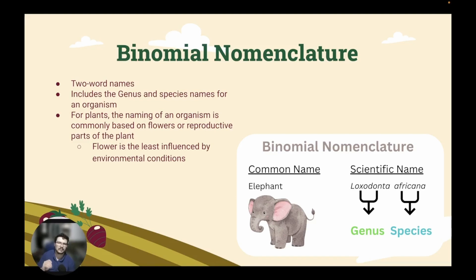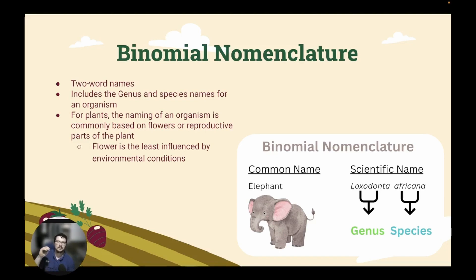That is the convention. So when you write a scientific name, you capitalize the genus and you italicize it. For the species, you leave it lowercase but italicize it. If you cannot italicize the genus and the species, then you underline both the genus and the species.